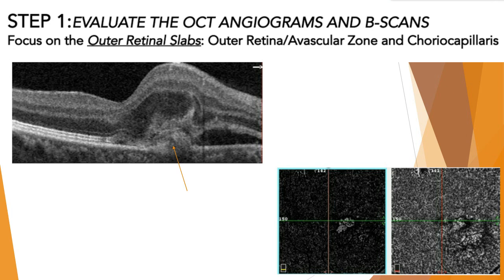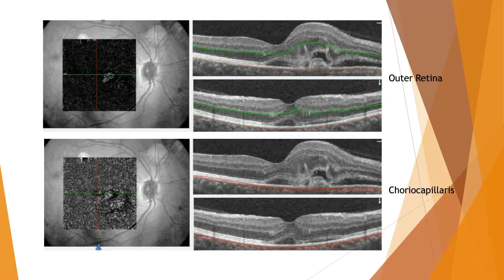The calipers are extremely important. On the outer retinal slab, the green caliper is the anterior boundary and the red caliper is the outer boundary. On the choriocapillaris slab, both red boundaries are right at the choriocapillaris. It's important that you encompass the entire lesion — you don't want segmentation cutting through the lesion because you'll miss part of it.